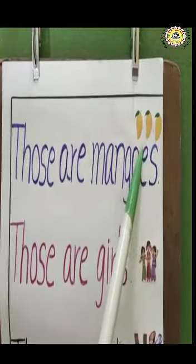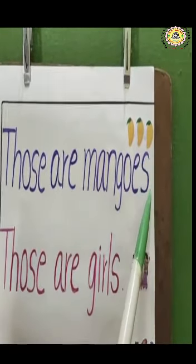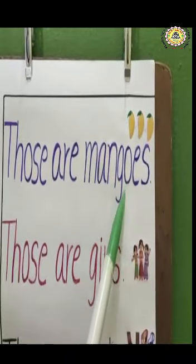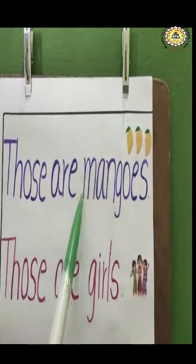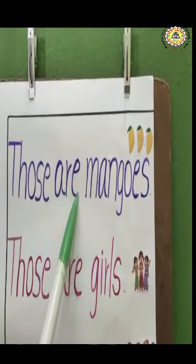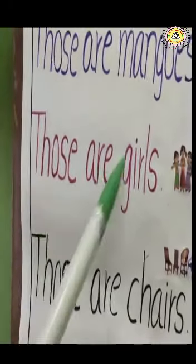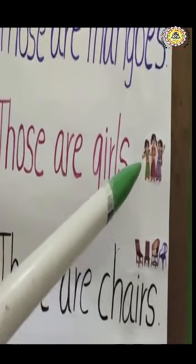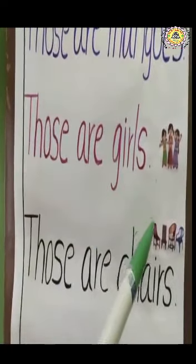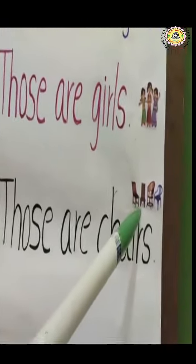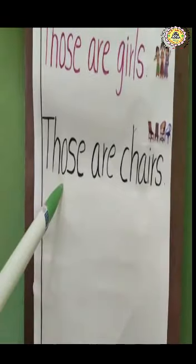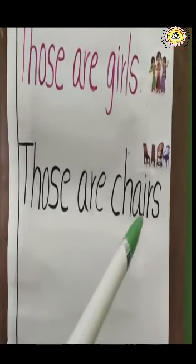Look at this picture — one, two, three — three mangoes are there. So here, those are mangoes. If more than one thing is there, we have to use 'are', not 'is'. See here, children — girls. Who are those? Those are girls. We are using 'those' because they are at a distance, far from us. That's why: those are girls. What are those, children? Those are trees. T-H-O-S-E. Those are trees.